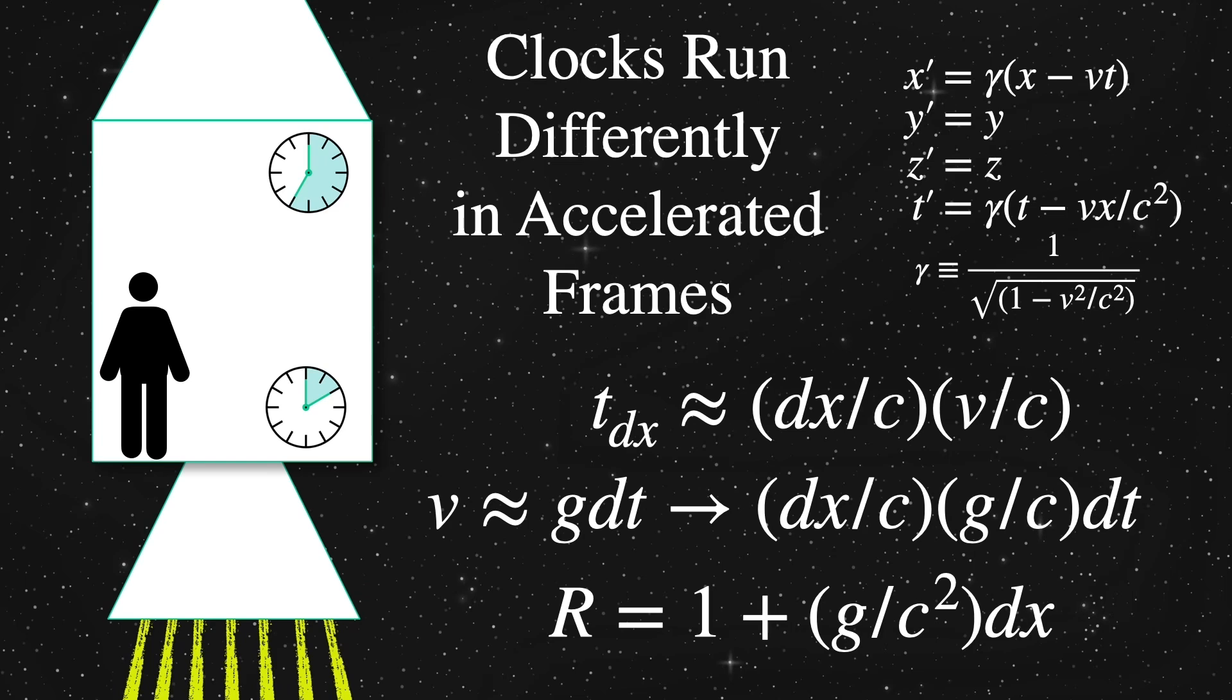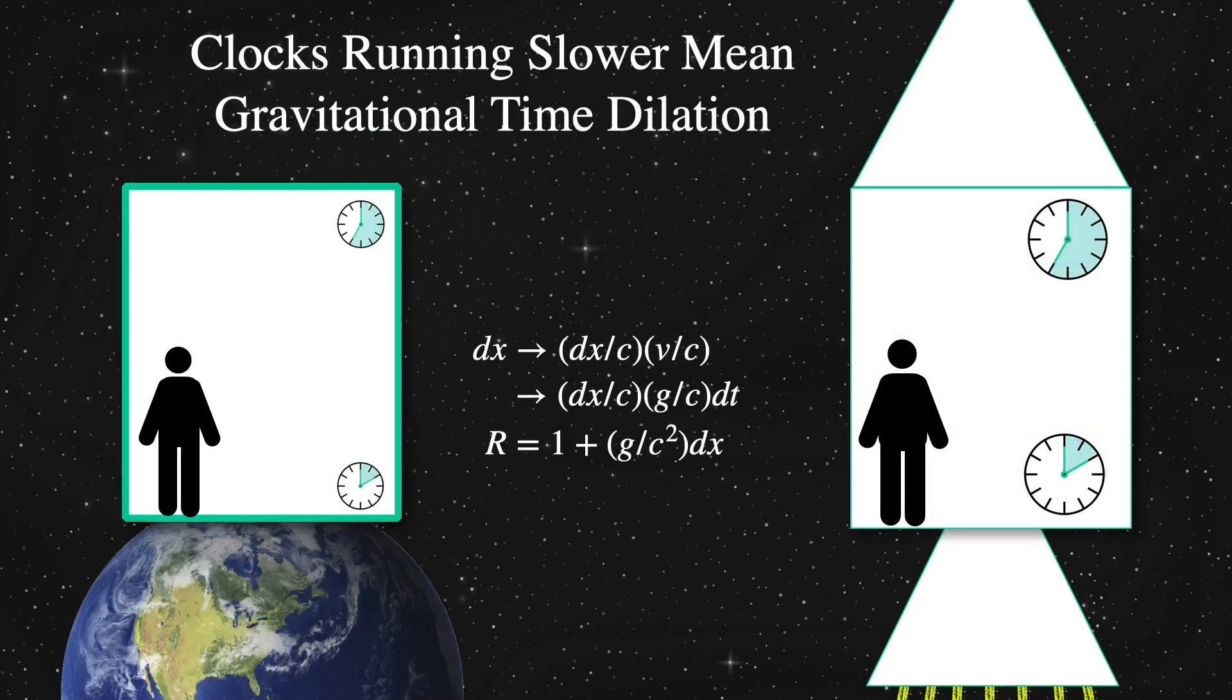Looking closely, we see these stacked up clocks have different tick rates. The tick rate R a little bit higher up in the rocket is slower by g over c squared times dx, where dx is the amount of distance a little bit higher up in the rocket. The equivalence principle implies that this change in the clock rate is the same whether the measured acceleration g is due to an accelerated frame without gravitational effects, like a rocket, or caused by a gravitational field in a physically stationary laboratory.